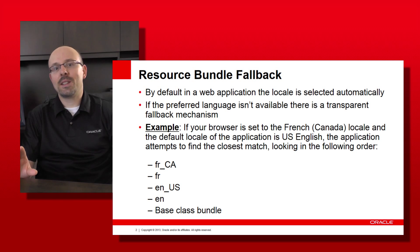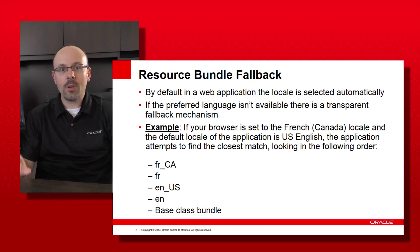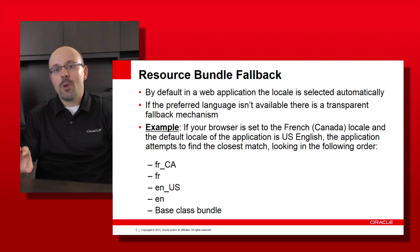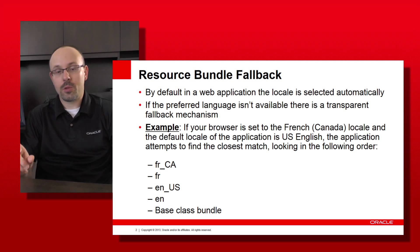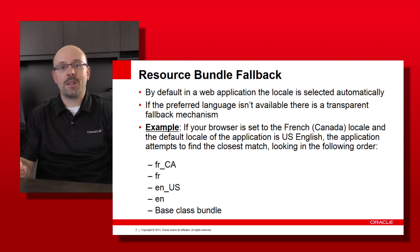Here is an example to illustrate. Suppose my preferred locale is Canadian French — the code for that locale is FR underscore CA. If I use an application where the default locale is US English, the application will first try to find a bundle matching FR_CA. If it doesn't find one, it will try to find any bundle starting with FR — it could be France French or Belgian French. If it doesn't find any, then it will switch to US English.